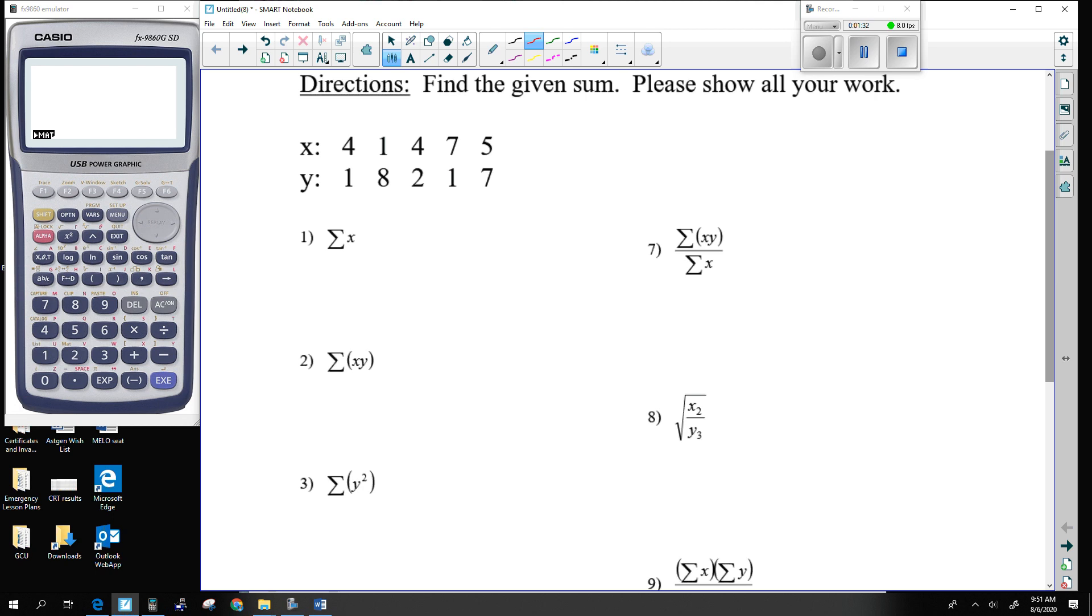So first one is summation of X. I notice that the inside is just purely X. So this is a summation of 4, 1, 4, 7, 5. Those are already the inside answers. So 4, 1, 4, 7, 5 is 21.